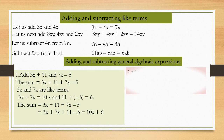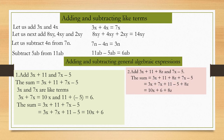Second question: add 3x plus 11, 8z, and 7x minus 5. We already know that 3x plus 11 plus 7x minus 5 equals 10x plus 6. Here, one more term 8z is to be added. Since 8z is an unlike term, it remains as it is. Therefore, the sum is 10x plus 6 plus 8z.